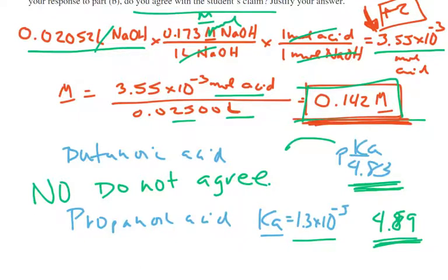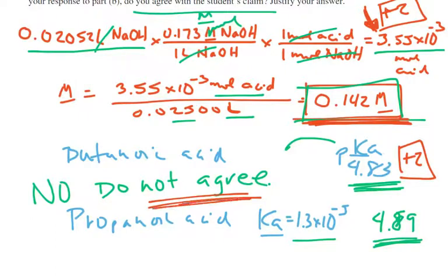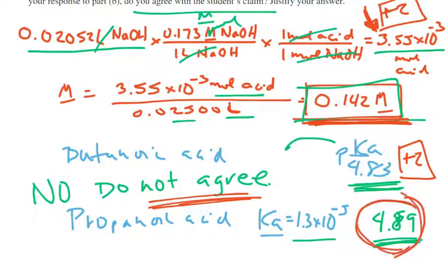This part is also worth two points. One point is for not agreeing and indicating that the pKa or Ka values are similar. The second point is for actually doing the calculation — converting and comparing either the pKa of both acids or the Ka of both. That completes the entire question.